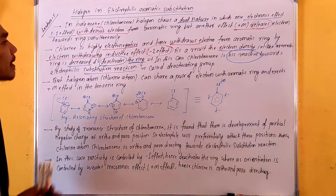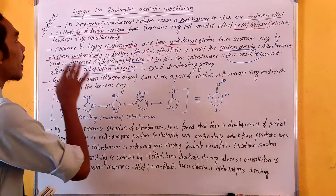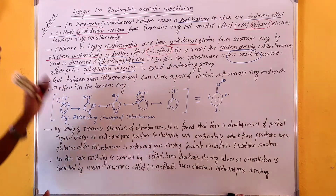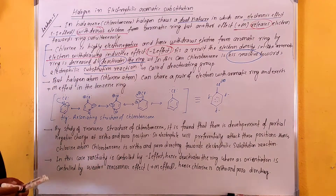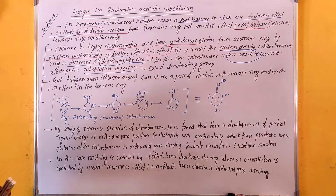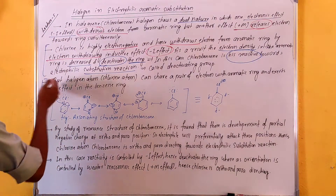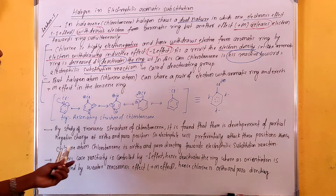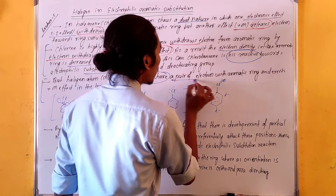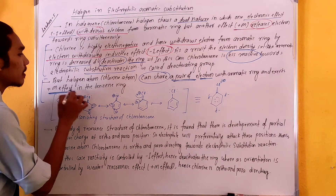Chlorobenzene and other halogen-substituted benzenes are less reactive towards electrophilic aromatic substitution reactions. However, halogen atoms such as chlorine can share a lone pair of electrons with the aromatic ring and exert a plus M effect in the benzene ring.